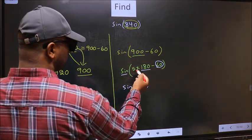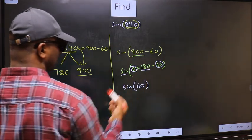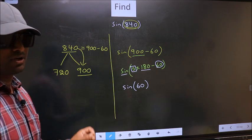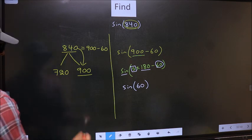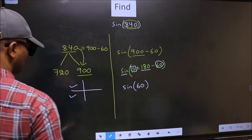That is 5. And 5 is odd. And all the odd multiples of 180, they lie either in the second or in the third quadrant.